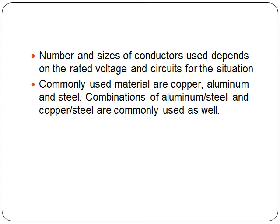Line conductors are used to transmit electricity from one place to another, and the number and sizes of conductors used would usually depend on the rated voltage and the number of circuits for the situation. The commonly used materials for line conductors are copper, aluminum, and steel. Combinations of aluminum and steel, as well as copper-steel, are commonly used as well.